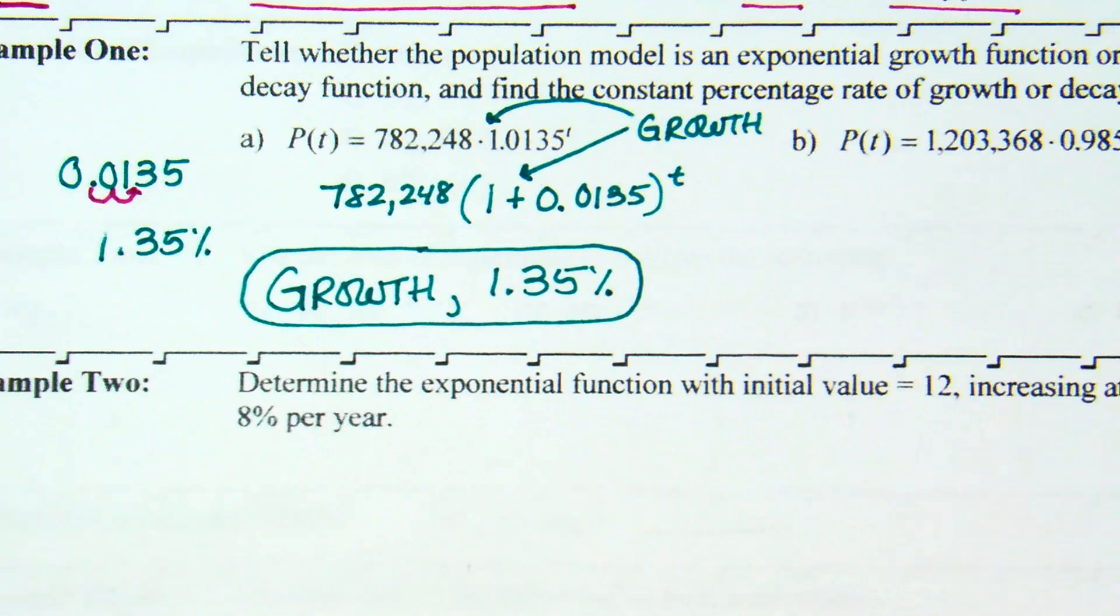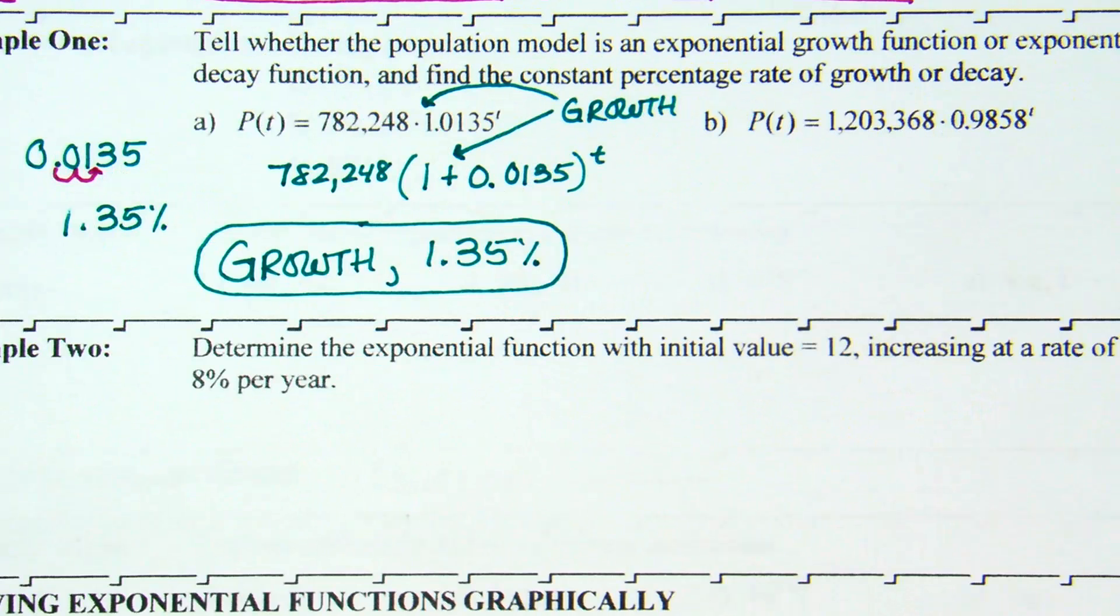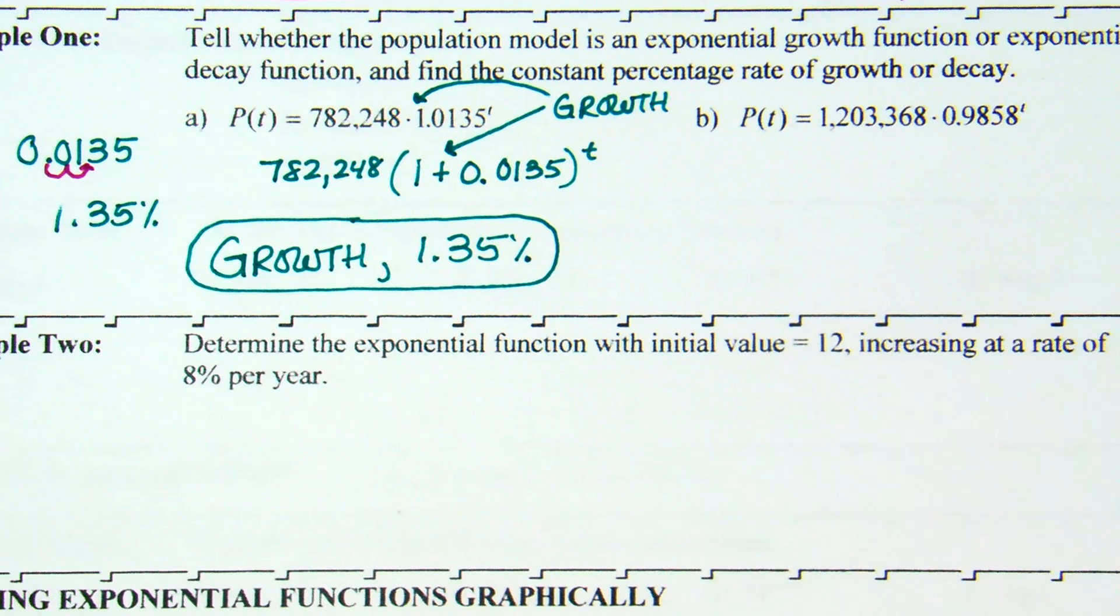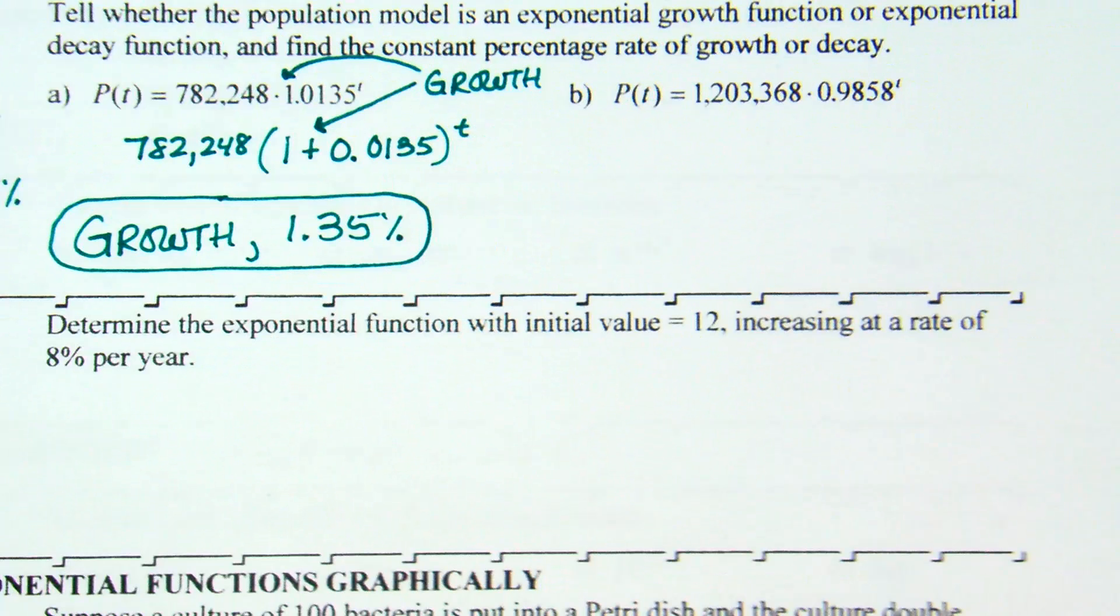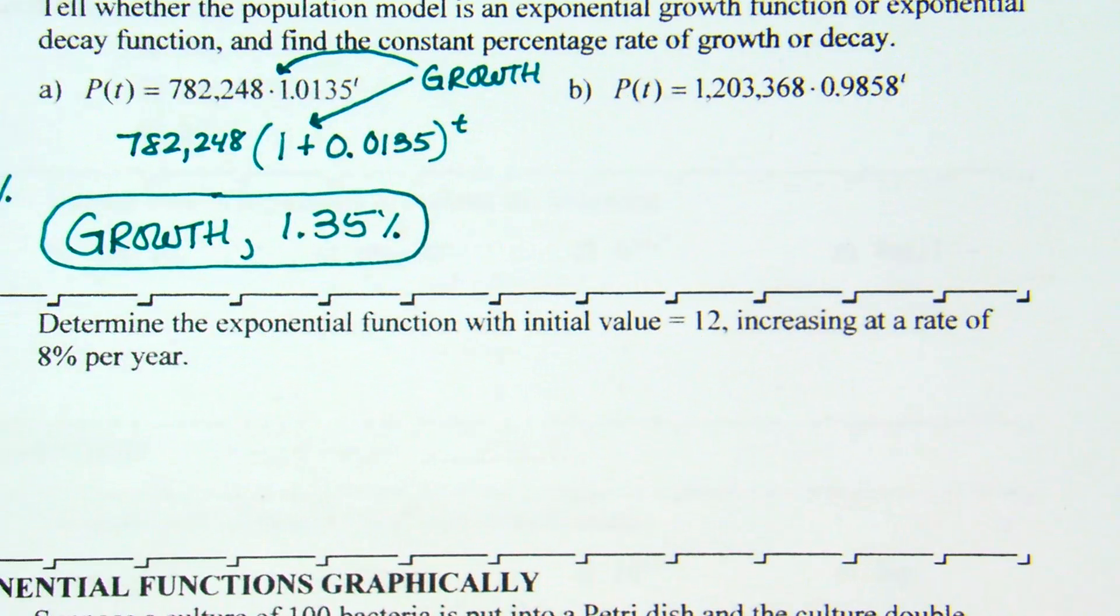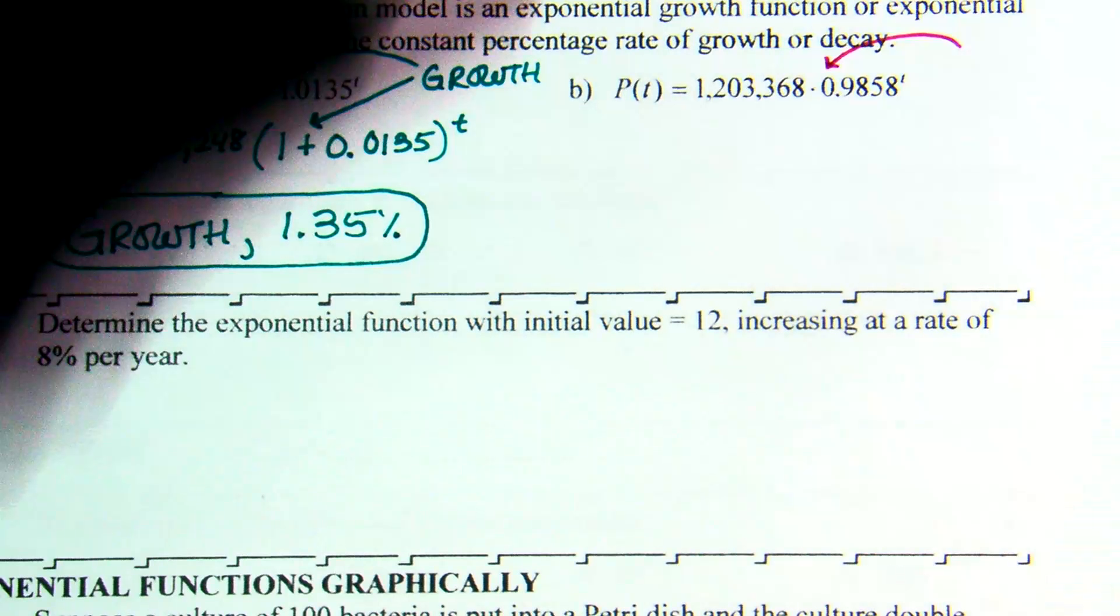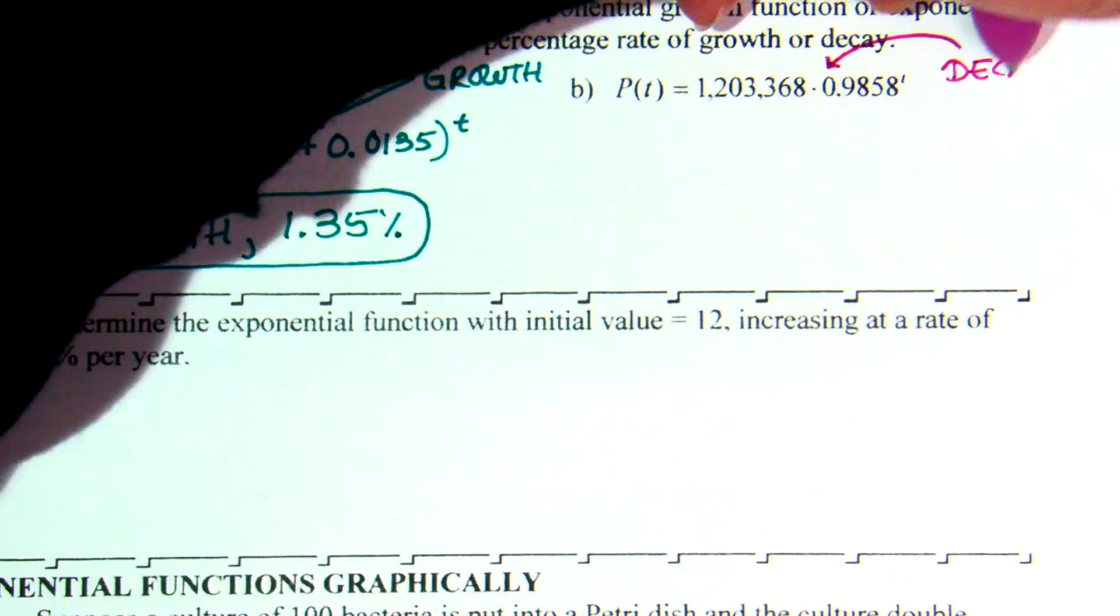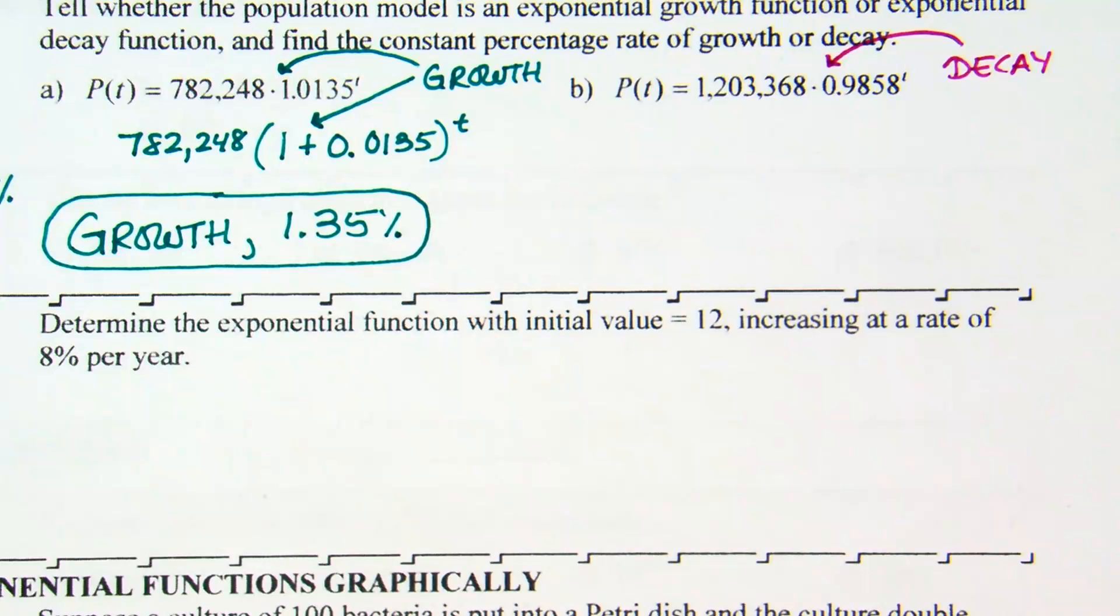I've definitely seen where we were looking at the percentage. And honestly, this leads us into, you guys have done interest, like interest on bank accounts and that kind of thing, and you've seen that throughout various math classes, and this leads itself into the same thing. Part B, P of T, 1,203,368, times .9858, raised to the T. What are your thoughts here? Has to be what? Decay. How can I tell decay without doing anything? This value right here, .9858, is less than 1, so I haven't done anything with this problem, but that's one way that I know this is going to be a decay problem.